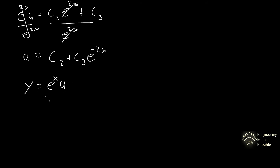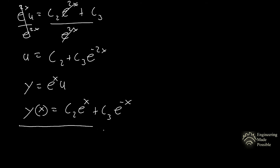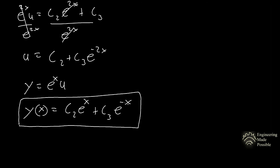Since we know y equals e^x times u, we plug it in and solve for the general solution of the differential equation. This is the reduction of order method. The first solution was given, we found another one, and we added them because they're linearly independent, which makes up the general solution.